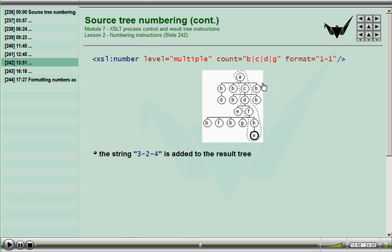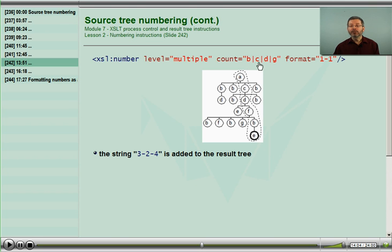Level equals multiple. I'm walking down the ancestry, looking for items being counted, and whenever I hit an item being counted, I do a level equals single at that level. If I hit an item that is not being counted, I do nothing. Working down, let's count B's, C's, D's, and G's at a multiple level. Is A being counted? It is not. Nothing gets added to the result.